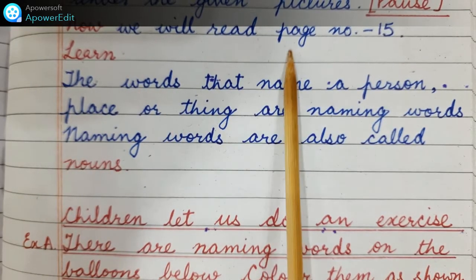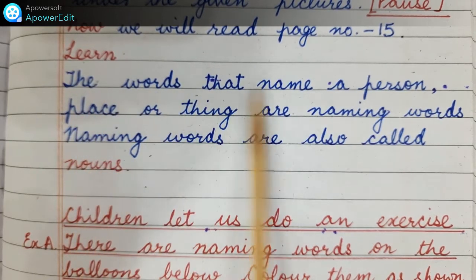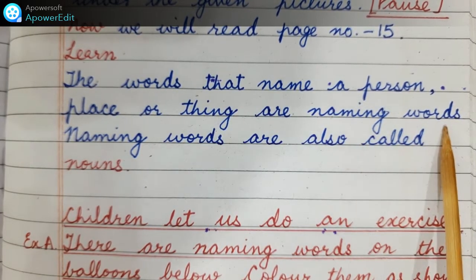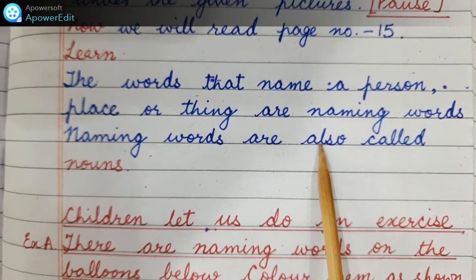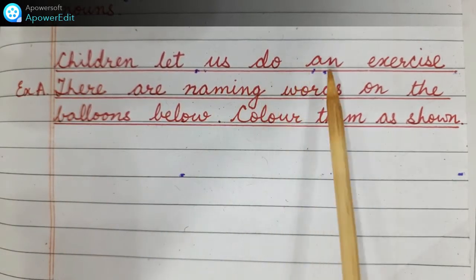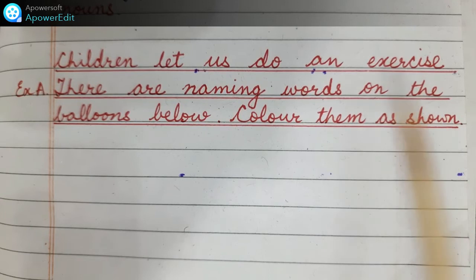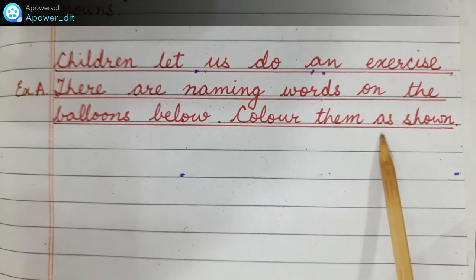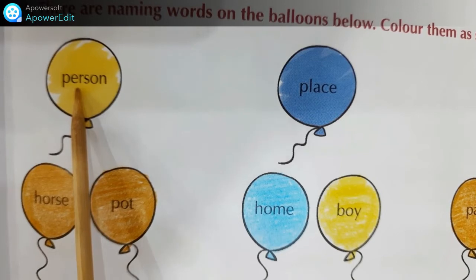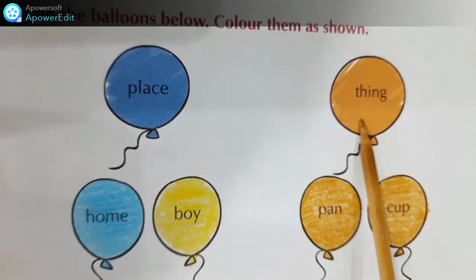Now we will read page number 15. Naming words are also called nouns. Children, let us do an exercise. Exercise A: there are naming words on the balloons below. Color them as shown. Children, for person we have to color yellow. For place we have to color blue. And for thing we have to color mustard.